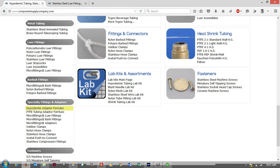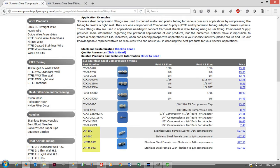Now that you've selected the correct ferrule, you can navigate to either the compression fittings page or the stainless steel luer fittings page. On either of these pages, you can select the correct fitting based on the ferrule size you are using.